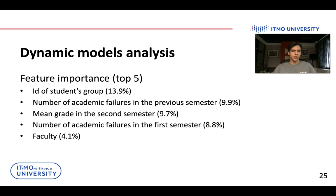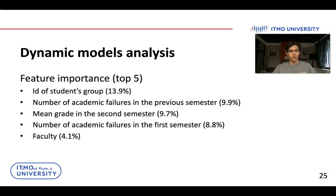We also analyzed feature importance for dynamic targets. In almost every case, the most important feature is the identity of the student's group. This is because different groups have different levels of study difficulty across faculties in the university, and this provides highly useful information for our models.